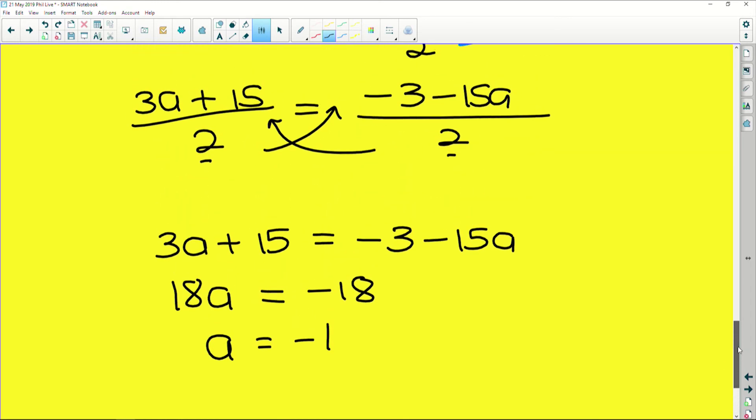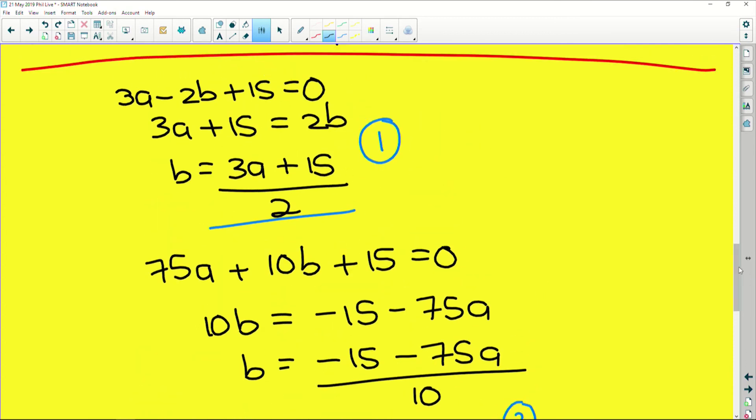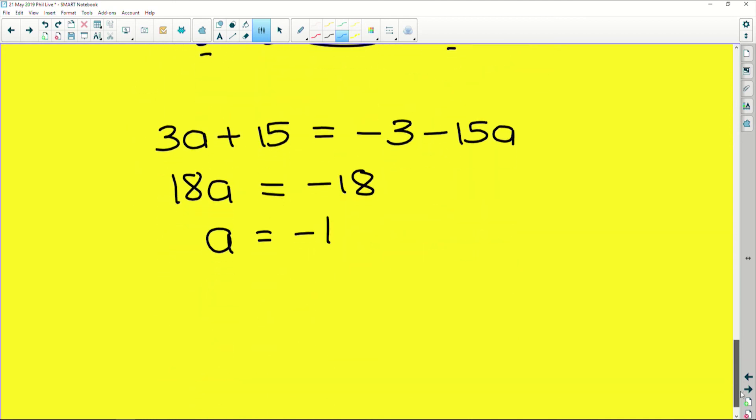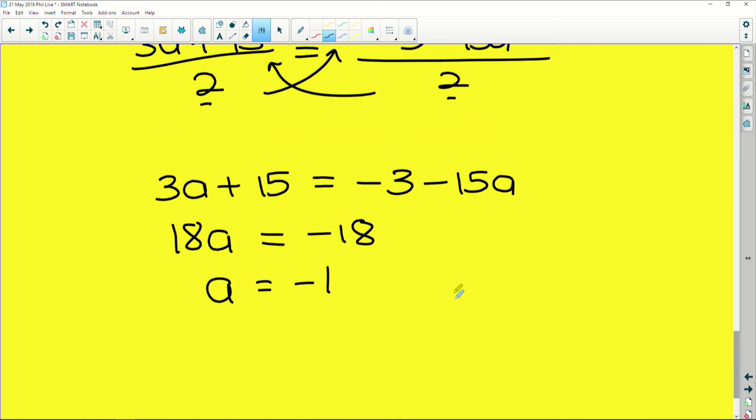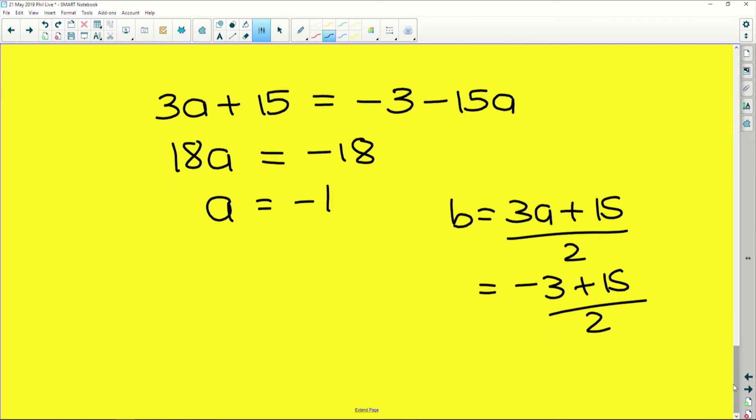Now to solve for the other variable, which is b, because remember we've already solved for c up at the top there. To solve for b we just simply substitute this a value into one of the b equations. So one of the b equations is (3a + 15)/2, which gives us (-3 + 15)/2, which gives us 12/2, which is 6. So we found that a is equal to -1, b is equal to 6, and c is equal to 15.